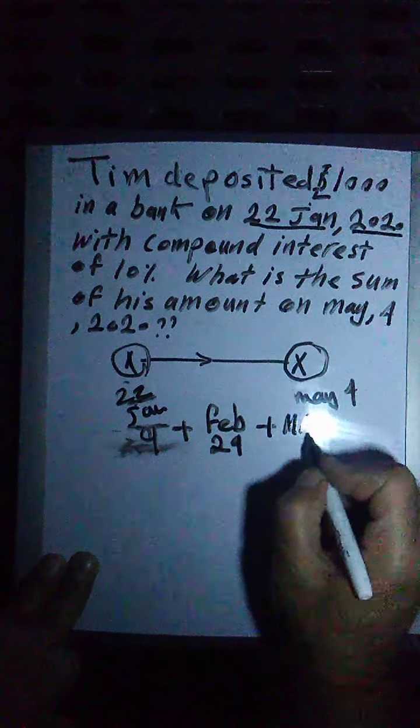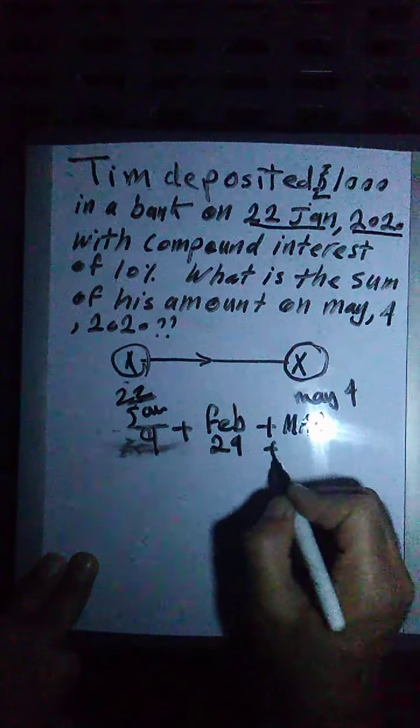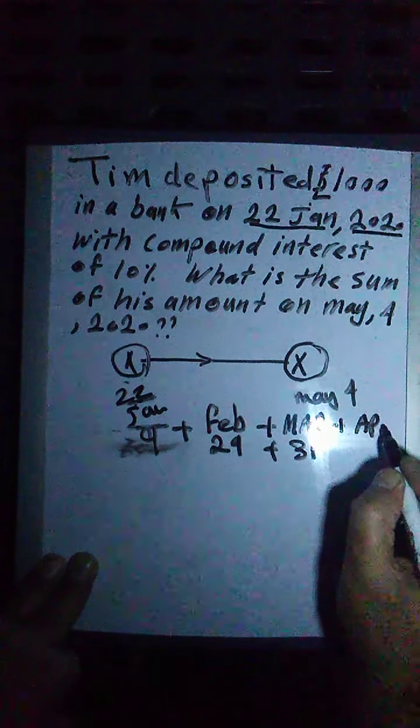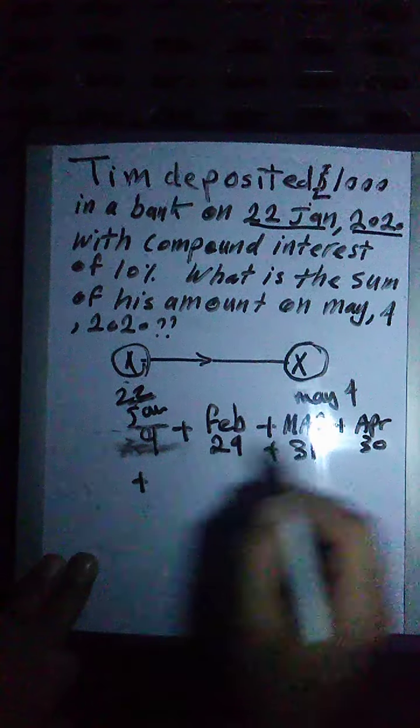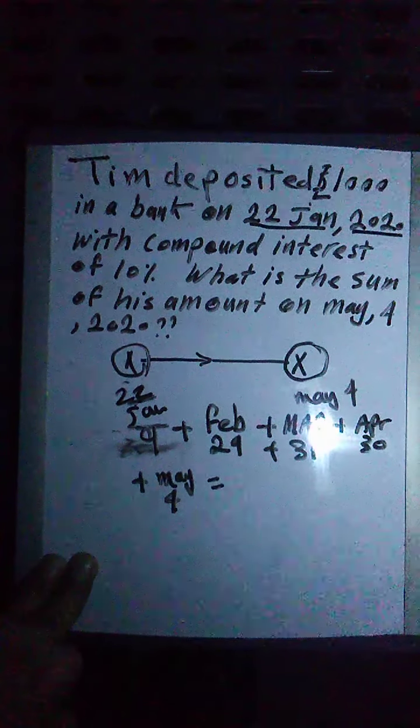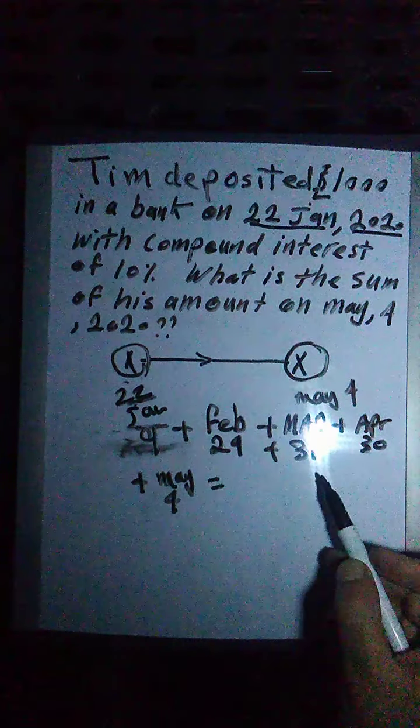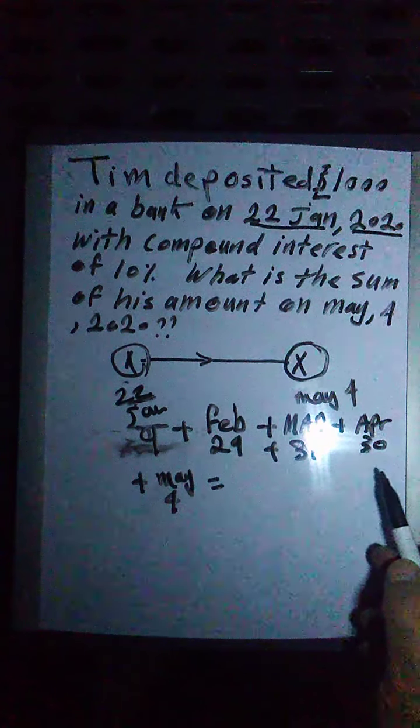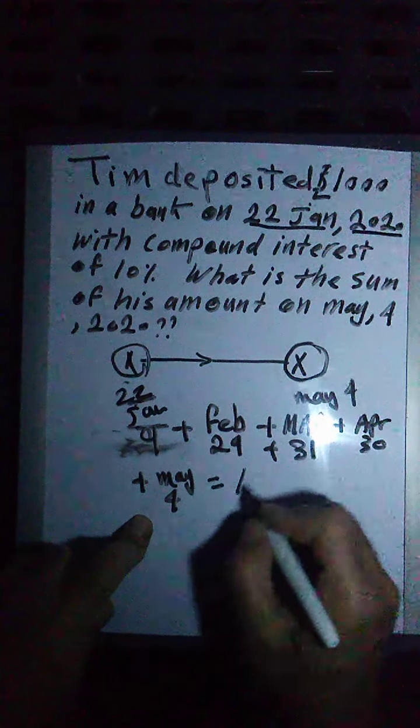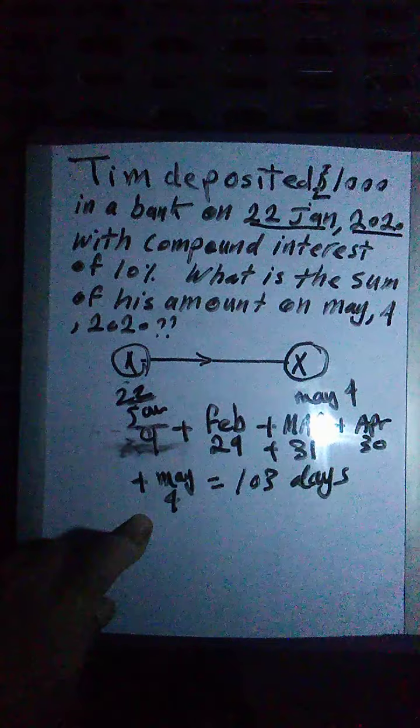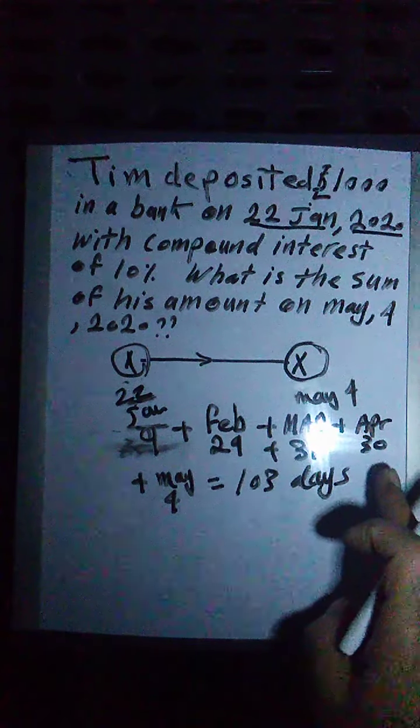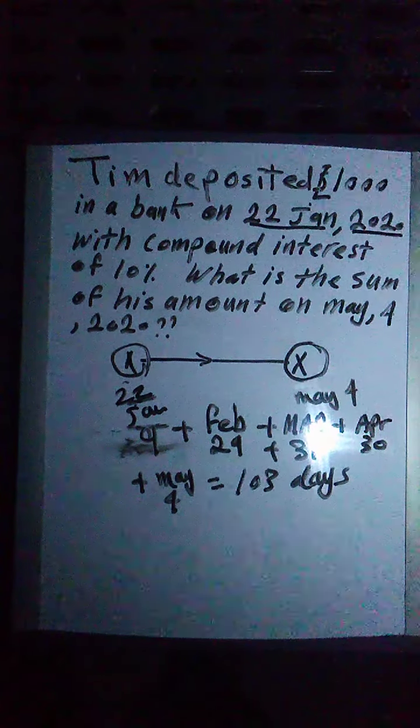Then March, March all will be 31 days. Then all April. April will be 30 days. Then plus May. May we have four days in May. All of it. All this will come to 103 days. If you do it with the calculator, 103 days.